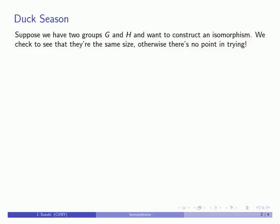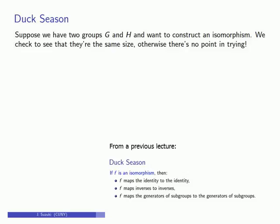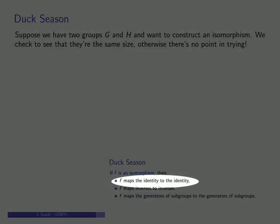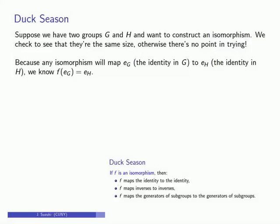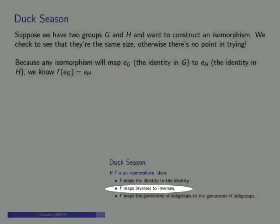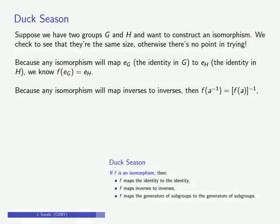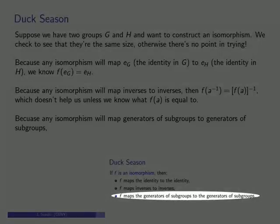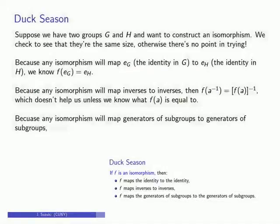After we've run this check, we might consider the three properties of isomorphisms that we found out last time. First, an isomorphism has to map identity elements to identity elements. Second, isomorphisms map inverses to inverses. And finally, isomorphisms map generators of subgroups to generators of subgroups.